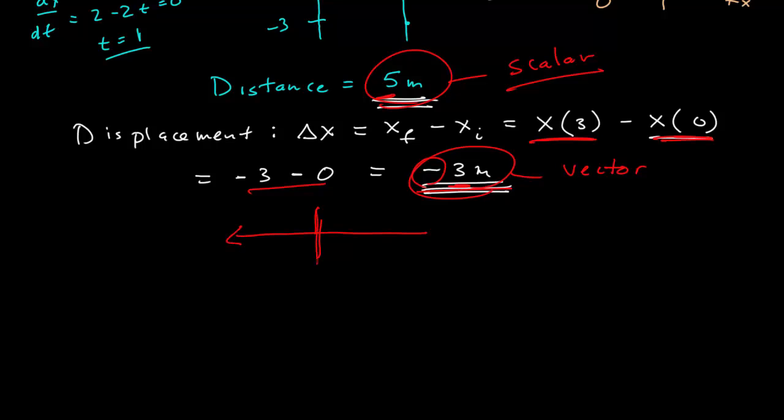And the negative sign is telling me that that vector is pointing in the negative x axis. If I were to draw that, here's positive x. Then it would give me a vector of magnitude three meters pointing in the negative x direction. And so that difference is the difference between scalar and vector, is a key difference between them.